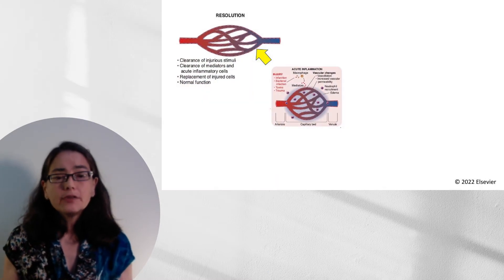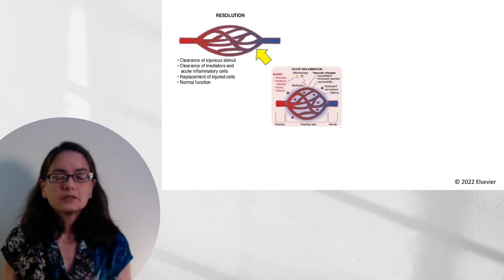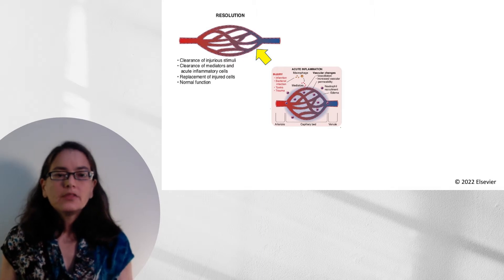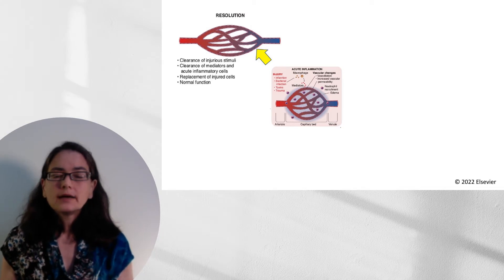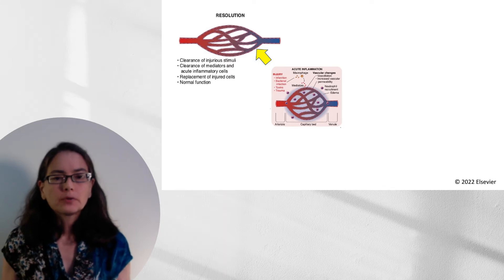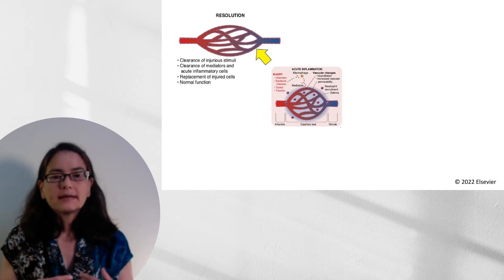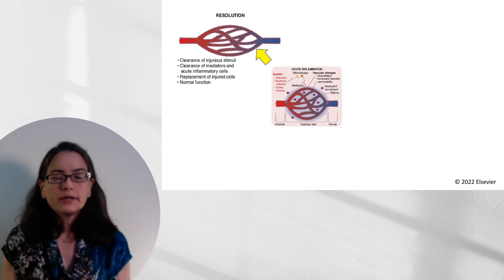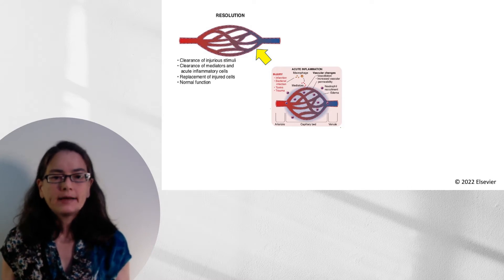So resolution. If the injury is small, if we as physicians address the infection quickly, then we'll have clearance of the injurious stimuli. The dead cells and mediators will be cleared. We'll get replacement of those injured cells and normal function. So this is ideally what we would hope would happen. Say, for example, you get a knock on the shoulder and you have a bruise. There's going to be extravasation of blood, an inflammatory response as the dead erythrocytes are cleared, and some neutrophils coming into the area. But it's a minor injury. Everything is going to go back to normal function. There will be no knowledge that you ever had a hematoma there.